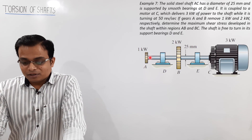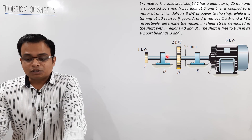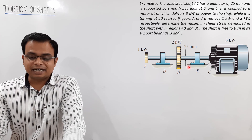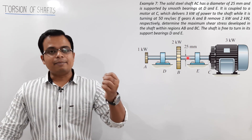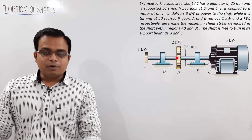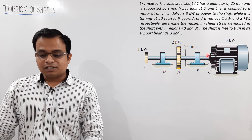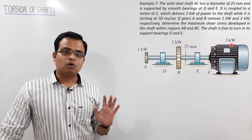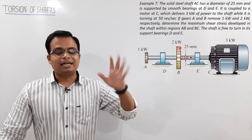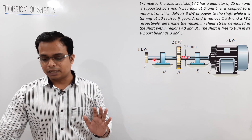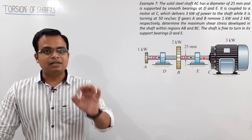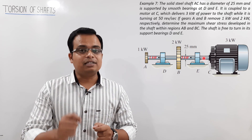The next problem: shaft AC is longer, with two portions AB and BC, supported by bearings at D and E. The shaft diameter is 25 mm. A 3 kW motor is coupled at one end; two kilowatts is taken out at an intermediate point, leaving one kilowatt in portion AB and three kilowatts in portion BC. We need to calculate the maximum shear stress in each portion.